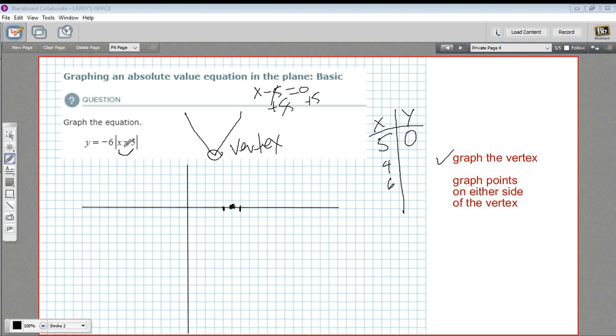Let's put in 4 here. 4 minus 5 is negative 1. The absolute value of negative 1 is a positive 1, because remember the absolute value turns anything negative into a positive. So that's a positive 1. Then I multiply that by the negative 6, and I get negative 6 times 1, or negative 6.